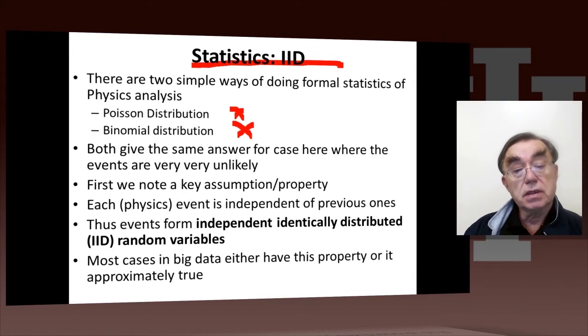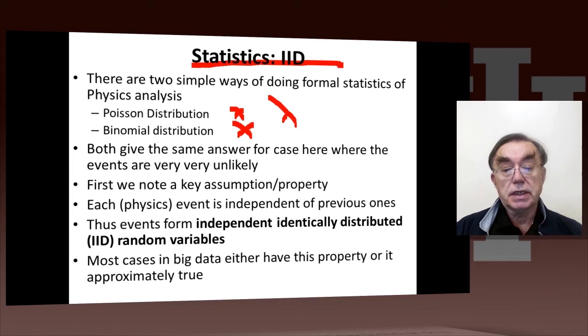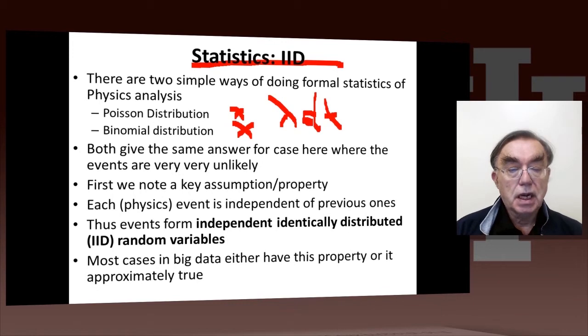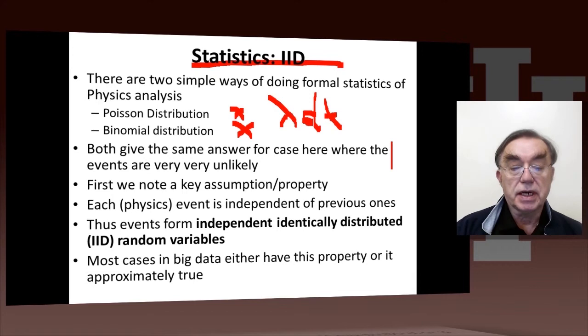Poisson distribution is sort of the continuous version of that. You have a bunch of nuclear matter, and you count the number of decays per time. There's a uniform probability, lambda dt, that a nucleus decays in time dt. And you can actually use either, because they are essentially the same for the limit we're working.